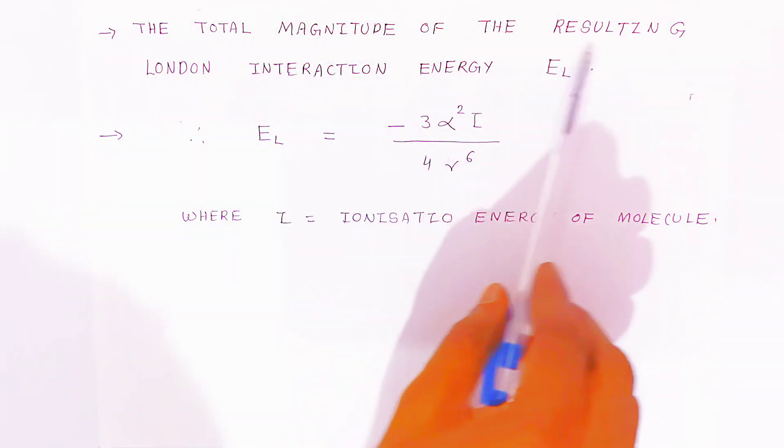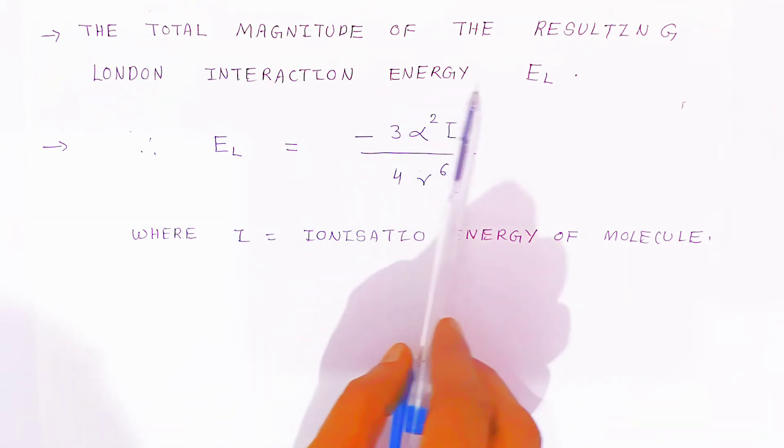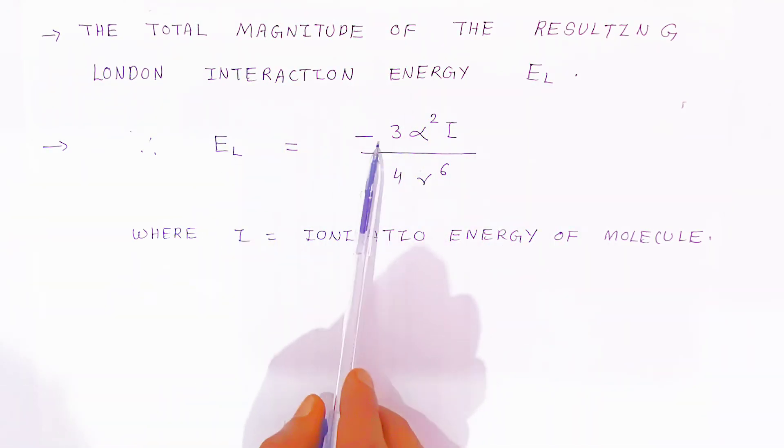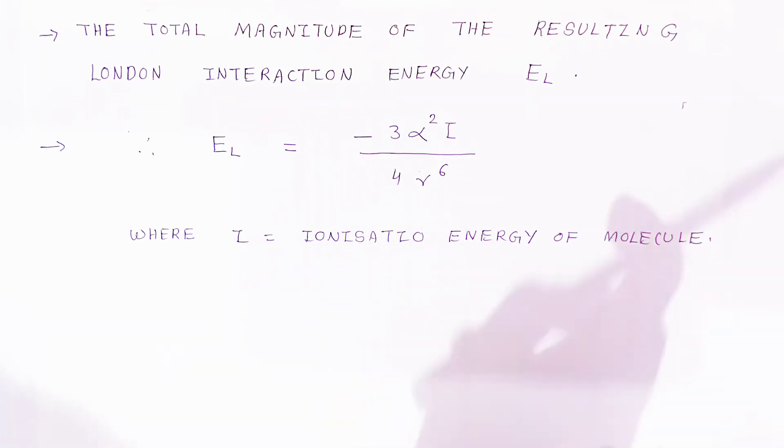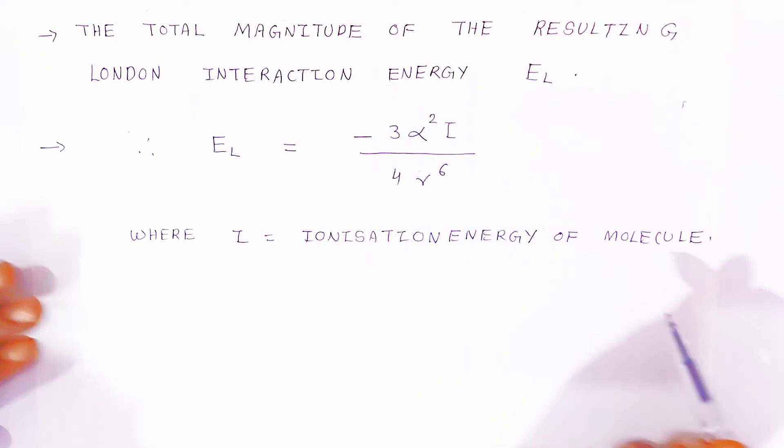The total magnitude of the resulting London interaction energy is given by E_L = -α^2 I / (4γ^6), where I is the ionization energy of the molecules.